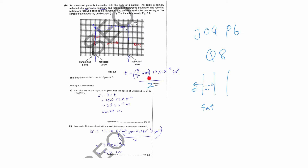So you must divide by 2. Then you take the speed — 1,450 — and multiply by this value. After you calculate this to be 2 microseconds, you get the thickness.